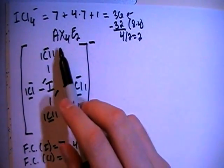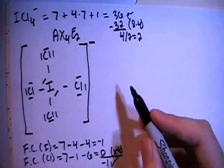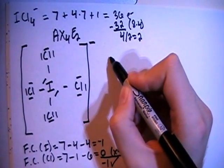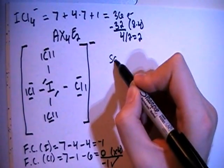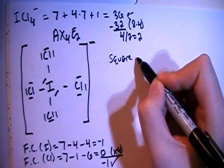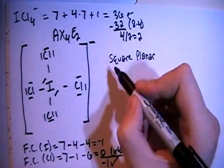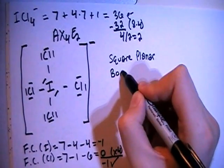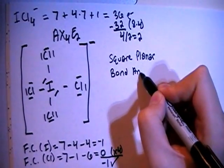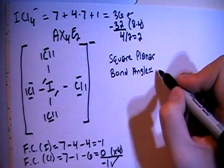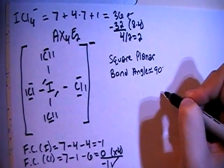Now in terms of shape, when you have the AX4E2 structure type, that means that the shape is going to be what's called square planar. And when you have a square planar shape, the bond angle, they're going to be approximately equal to 90 degrees.